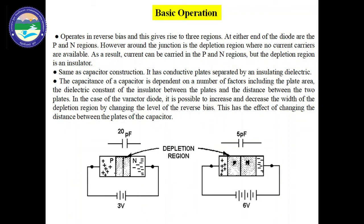If the reverse bias voltage is increased, the width of the depletion region further increases and the capacitance further decreases. On the other hand, if the reverse bias voltage is reduced, the width of the depletion region decreases and the capacitance increases. The decrease in capacitance means a decrease in stored charge, so the reverse bias voltage should be kept at a minimum to achieve large stored charges. Thus, capacitance can be varied by varying the voltage. In a varactor diode, the capacitance is varied when the voltage is varied, making it a variable capacitor. The capacitance of a varactor diode is measured in picofarads (pF).